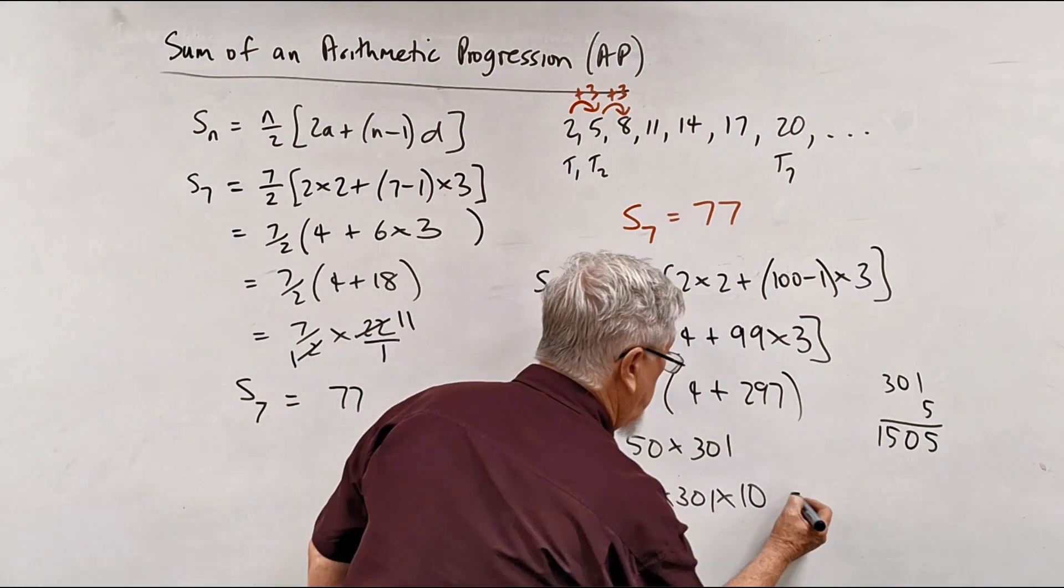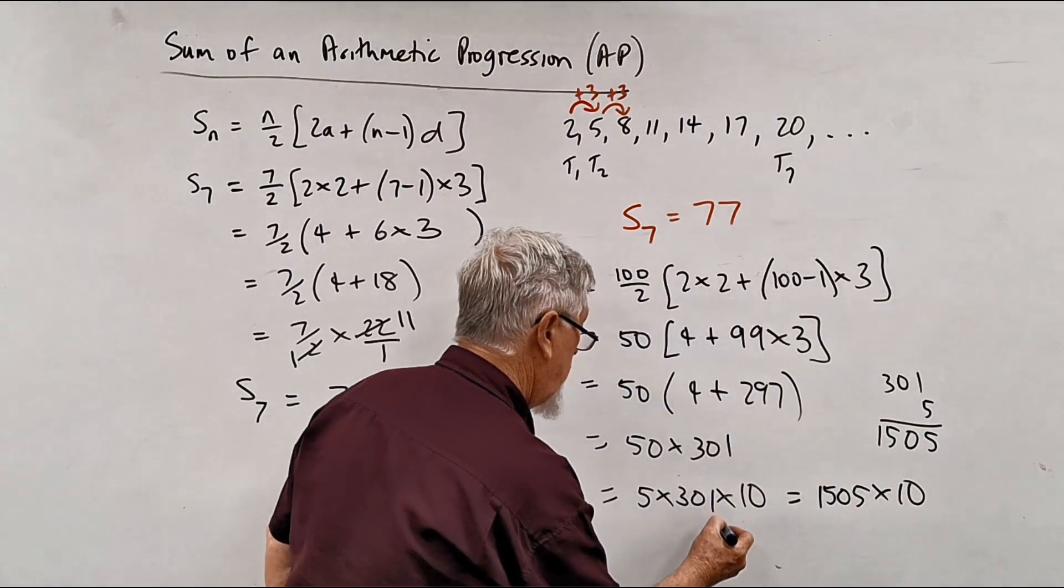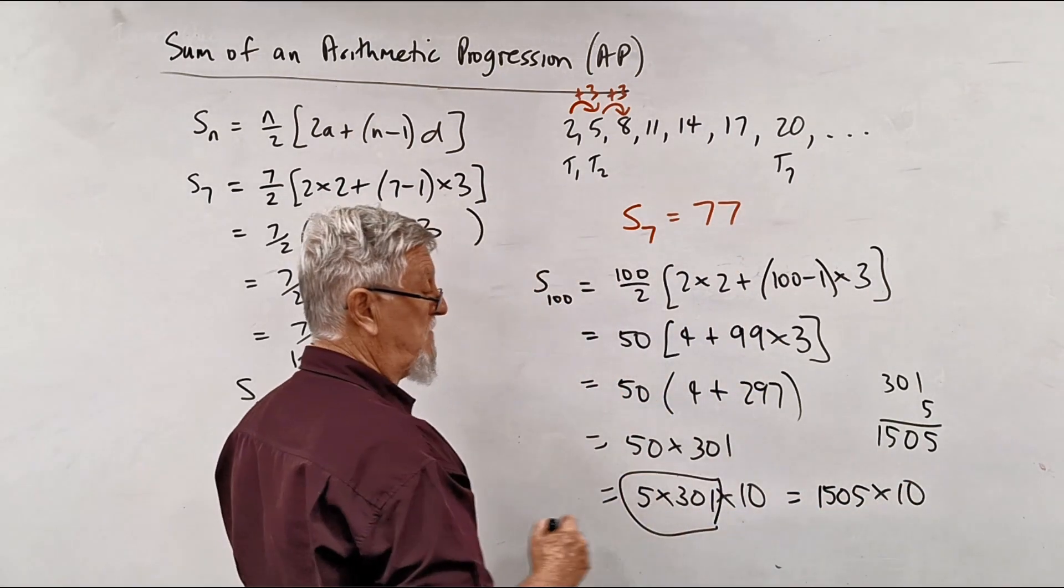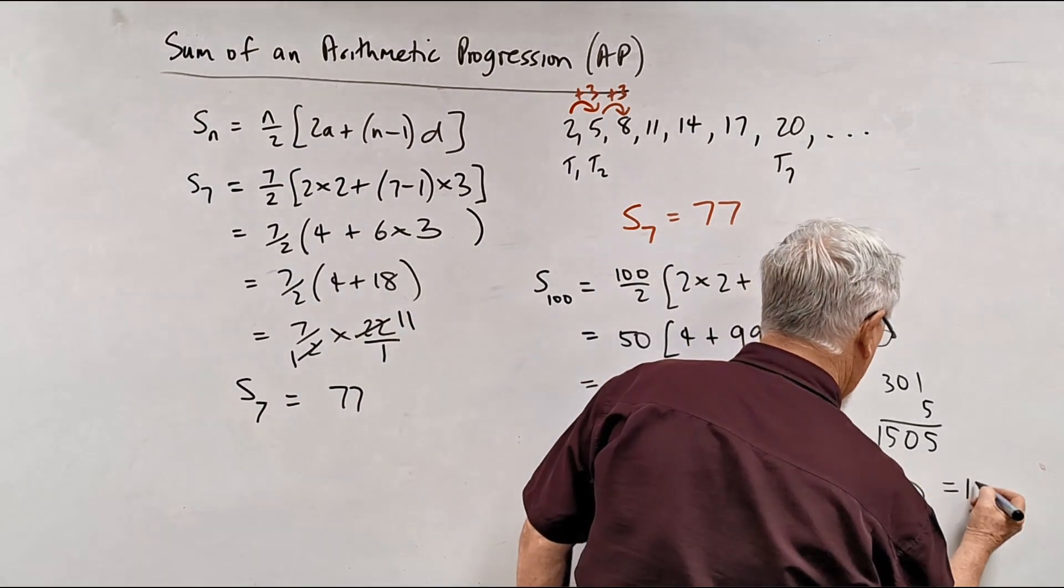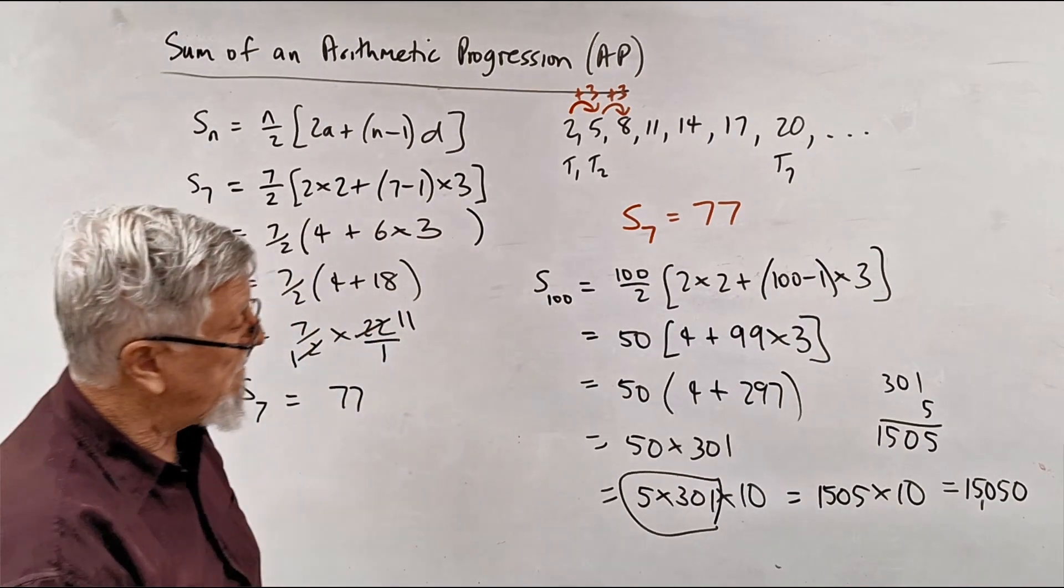So we've got 1505, and then we're going to, oh actually if I go the whole step, I don't want to go too far down, 1505 times 10. So that bit there is 1505, times it by 5, by 10, and you've got 1505, 0. 15,050.